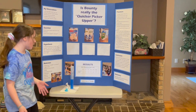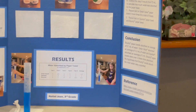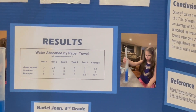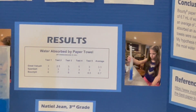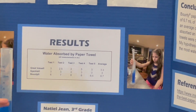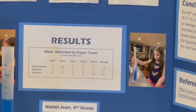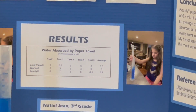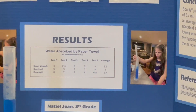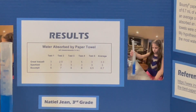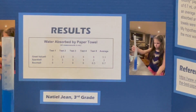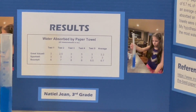Now let's go to our results. In tests 1 through 5 of Great Value, we had: 3, 2.5, 3, 5, and 3 ml. For Sparkle, tests 1 through 5 all had 3 ml of water.